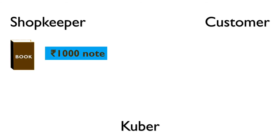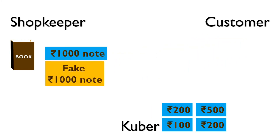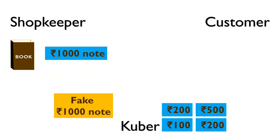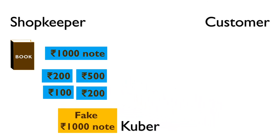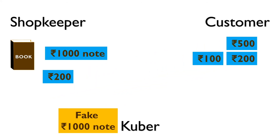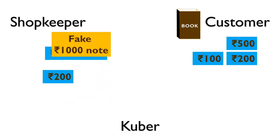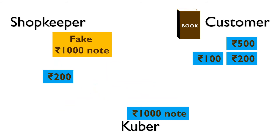Here we have shopkeeper, Kuber, and customer. Shopkeeper has a book and a real thousand rupee note; customer has a fake note of rupees thousand; and Kuber has change of thousand rupees. Customer gives the fake thousand rupee note to shopkeeper; shopkeeper gives it to Kuber; Kuber gives change of thousand rupees; shopkeeper returns 800 rupees and the book to customer. Then Kuber gives the fake note back to shopkeeper, and shopkeeper returns real thousand rupees.